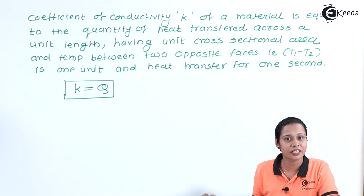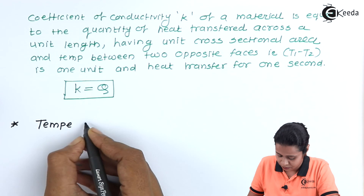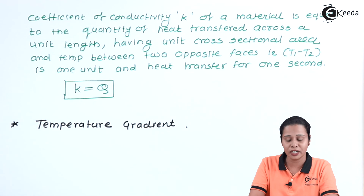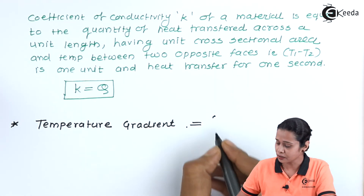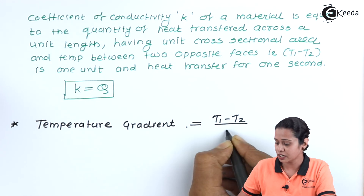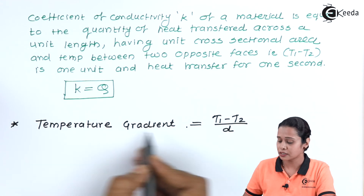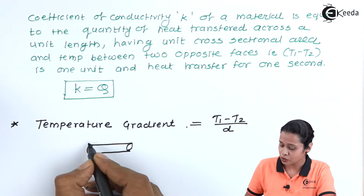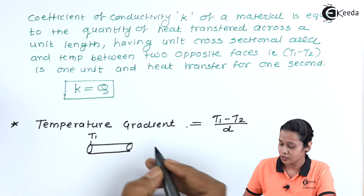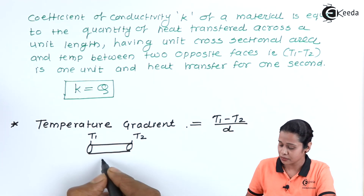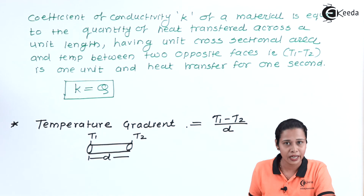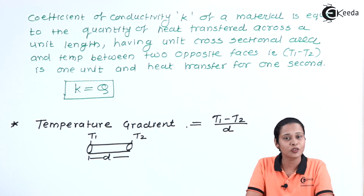Now let us see what is temperature gradient. Temperature gradient is defined as the change in temperature per unit length of the rod. For a rod with two ends where the first end is at temperature T1, the second end is at temperature T2, and the separation between them is D, the temperature gradient is the change in temperature per unit length.